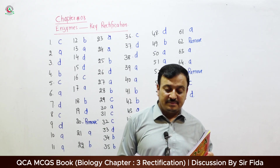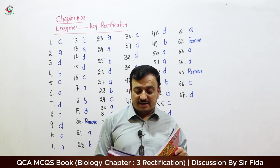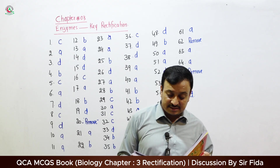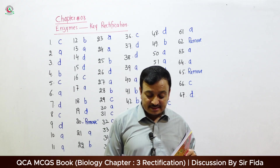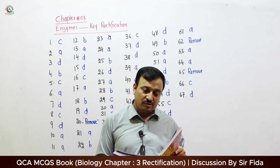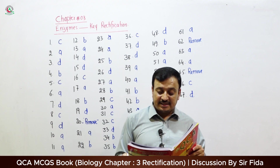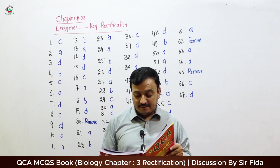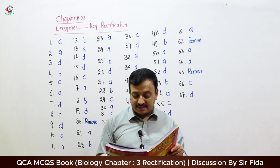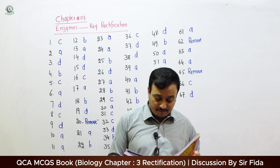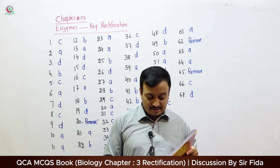Question 22: According to the Induced Fit model, the active site of an enzyme is — correct answer B: Flexible. Question 23: If any organic or inorganic compound is attached to an enzyme to increase its activity, it is called — correct answer A: Cofactor. Question 24: If the cofactor is organic and weakly attached to the enzyme, it is called — correct answer A: Coenzyme.